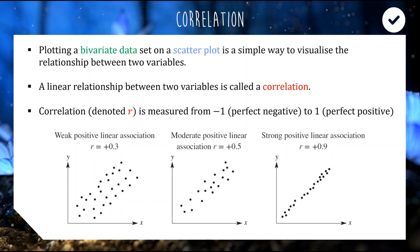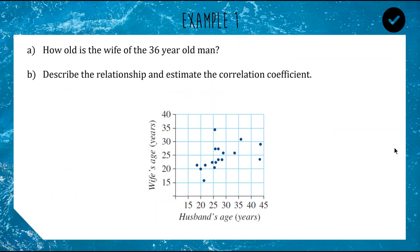As you get closer and closer to one, your scatter plot becomes more and more consistent, and you'll eventually end up with very consistent straight data. Let's have a go at a quick example — we've got a scatter plot with the age of the husband on the x-axis and the age of the wife on the y-axis.